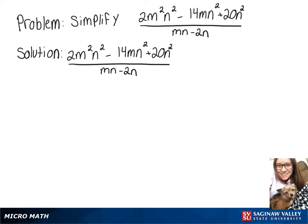In this video we're going to simplify 2m²n² - 14mn² + 20n² over mn - 2n.